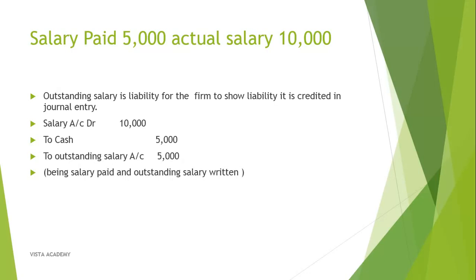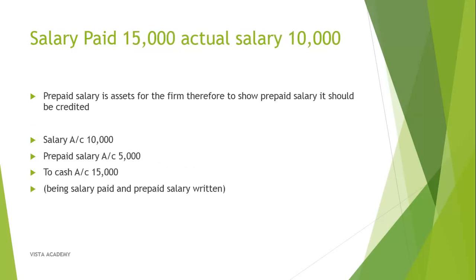In the last entry: salary paid 15,000, actual salary 10,000. Here salary has been paid in advance. The salary which is paid in advance is an asset for the firm — it is a prepaid salary. So the salary entry will be: Salary Account 10,000, Prepaid Salary 5,000, and Cash 15,000.